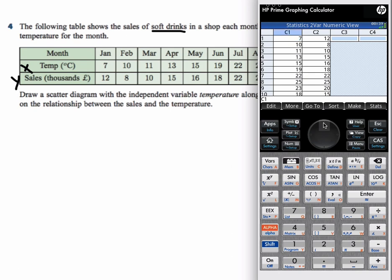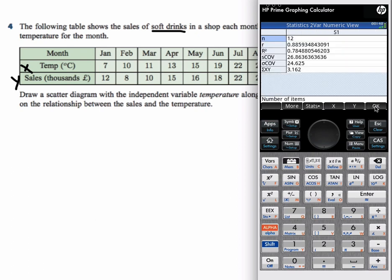Now, if there's already data in there, you can go up to C1 and press clear, so shift and then the escape button. But I've already typed in the data, make sure it's all correct. And then you can easily get the correlation coefficient by clicking on stats.